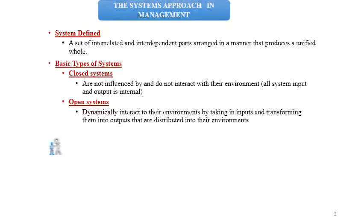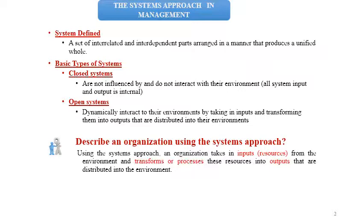Any organization must work as an open system. To know how the system works, we must first define what we mean by system. A system is a set of interrelated and interdependent parts arranged in a manner that produces a unified order. There are two types of systems: closed systems and open systems.